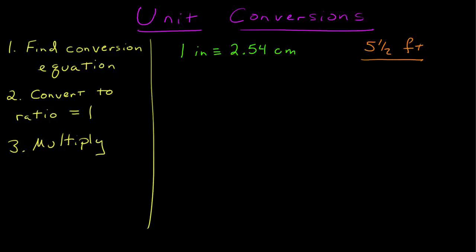In unit conversions, there are three rules to follow. First, find a conversion equation that gets you from units that you have into units that you want. From that equation, convert into a ratio that equals the number 1, and then multiply it to your number.